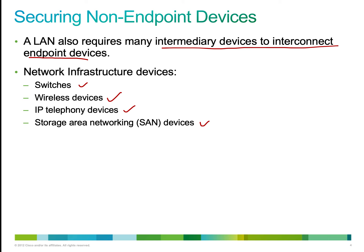Securing non-endpoints: the local area network also requires many intermediary devices to interconnect the endpoint devices together, like hubs, switches, and bridges. Network infrastructure devices include your switches, wireless devices, IP telephony devices, storage area networking (SAN) devices, and wireless access points — all of which need to be secured as well.